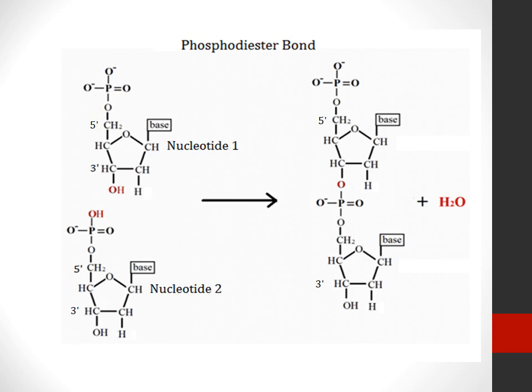This is the 5' position of nucleotide two and this is the 3' position of nucleotide two. So we can say that this dinucleotide chain is running from 5' to 3' direction. If our basics are clear like this, it will help you understand and retain the structure of DNA very well.